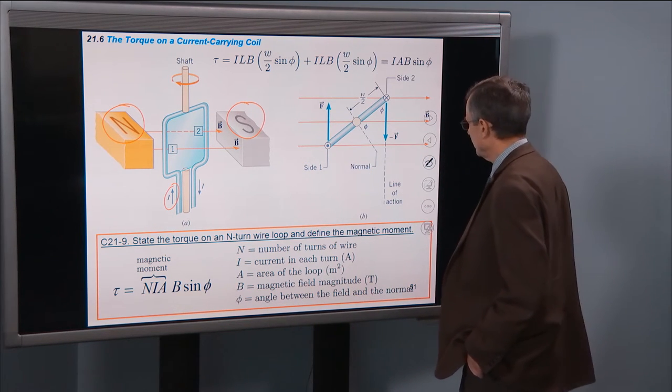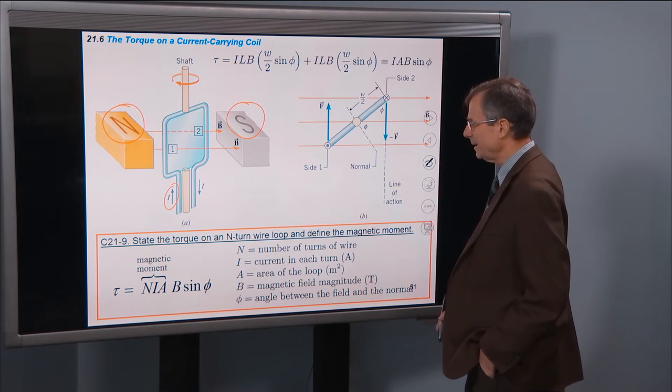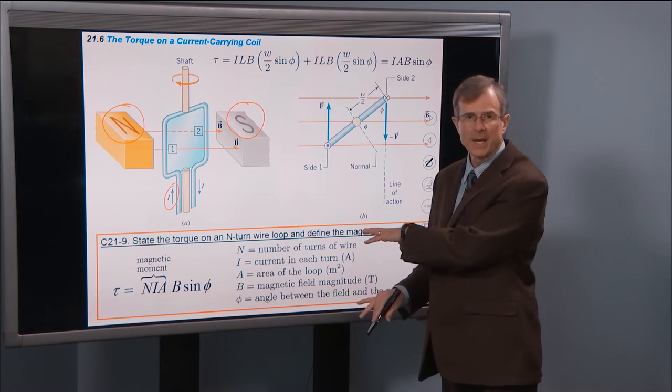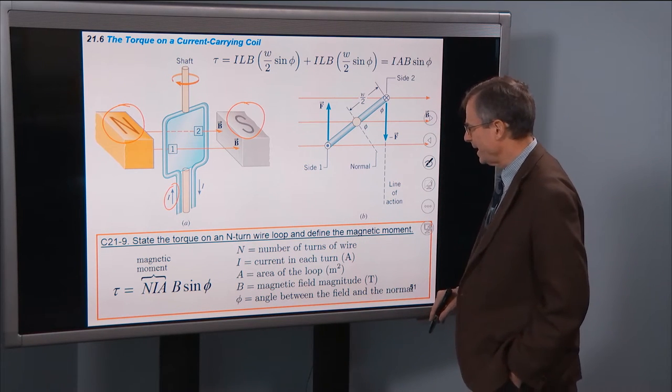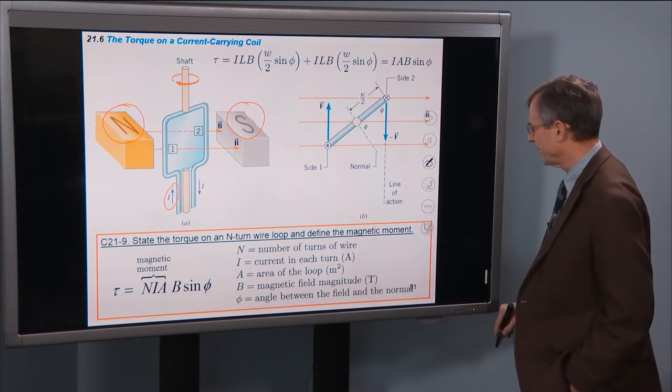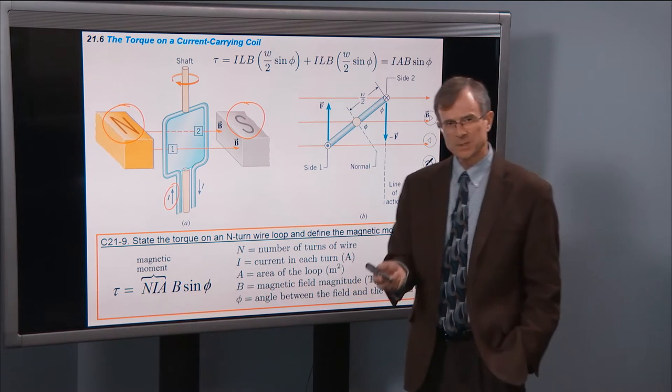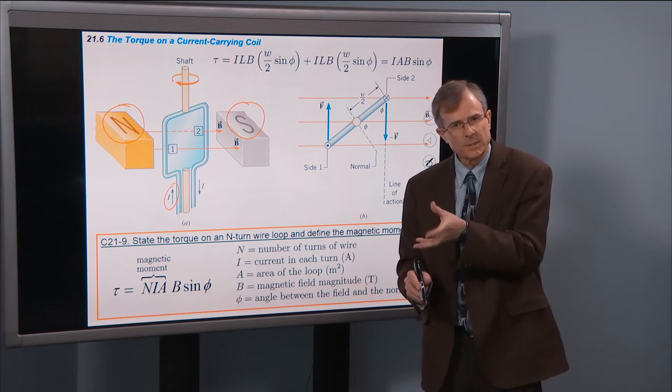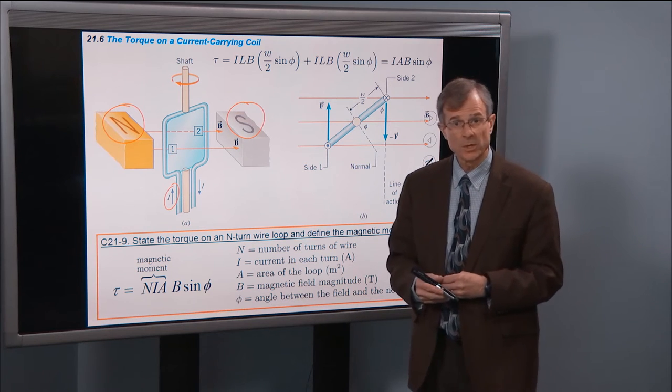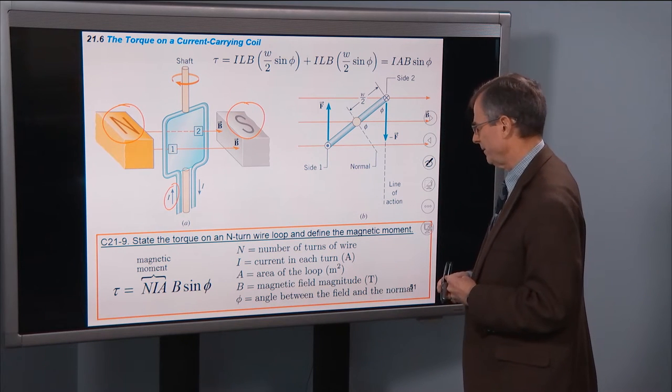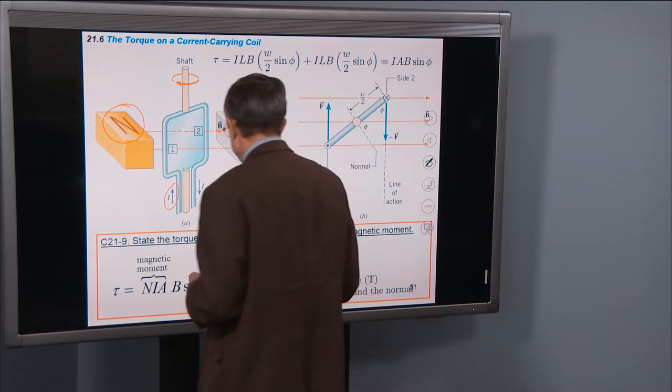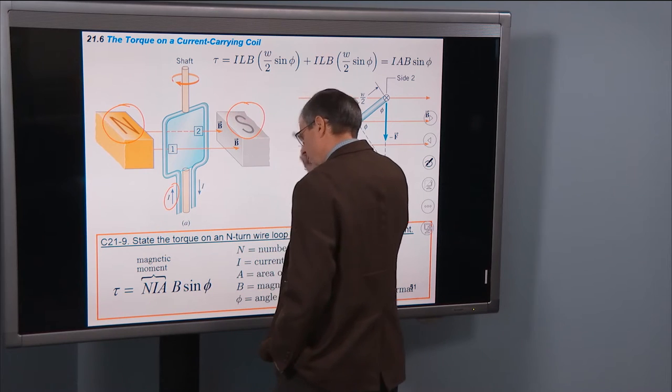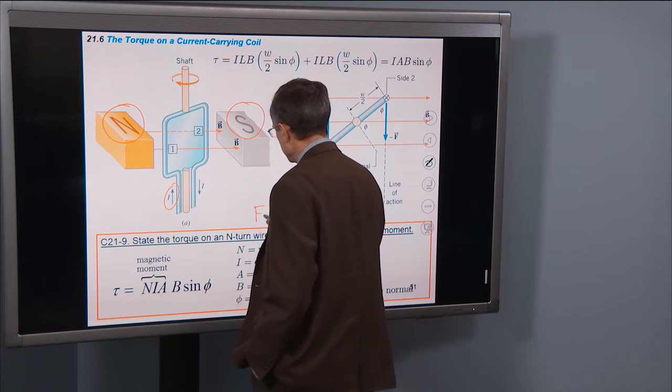The math is a little bit slightly painful, and you can go through it in the book if you'd like. The bottom line is captured in this concept: state the torque on an N-turn wire loop and define the magnetic moment. So we're not talking about forces here, we're talking about torques. Those are a turning force that causes something to turn.